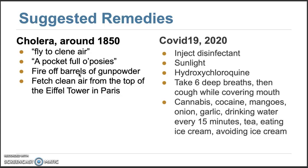At that time there was no good cure for cholera. Suggested remedies included fetching clean air from the top of the Eiffel Tower in Paris, or firing barrels of gunpowder. This sounds ridiculous, but it's similar to COVID in 2020 — when we weren't clear about the disease, people talked about injecting disinfectant, using sunlight, taking 60 breaths while coughing, or drinking water every 15 minutes.